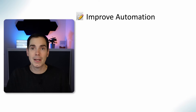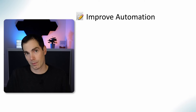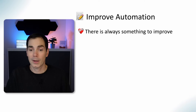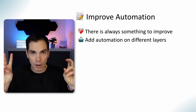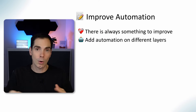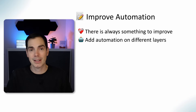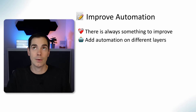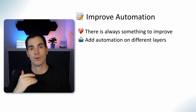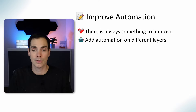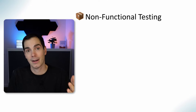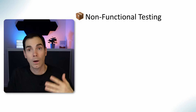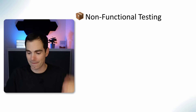Improving automation is also pretty obvious, and it's what most people work on when they tell me they have nothing to test — because there's always something to improve, something to add. More automation doesn't always mean better, so keep that in mind. Think about automation on different layers, and consider moving something from a UI layer to an API or back-end layer to speed up execution.